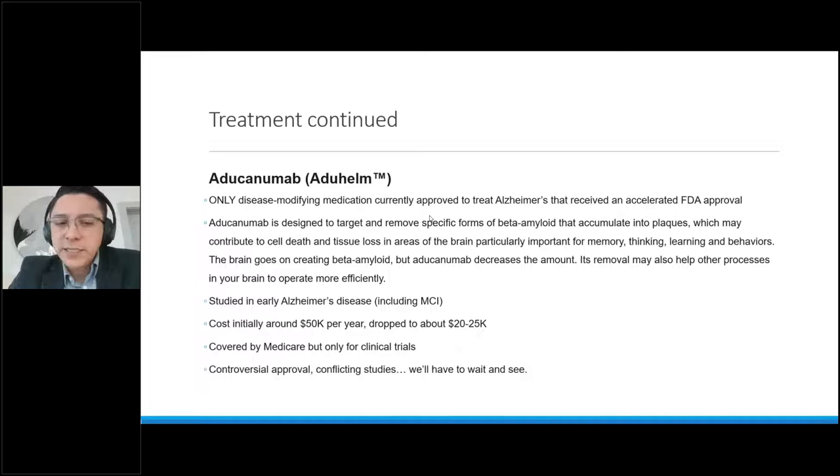Now, the new kid on the block. If you guys kept up with the news this last year, you probably saw that there was a new breakthrough treatment for Alzheimer's disease, aducanumab or Aduhelm, MAB at the end, that indicates monoclonal antibody immunotherapy. And it is the only disease-modifying medication that is currently approved to treat Alzheimer's disease. And it received an accelerated FDA approval. Now, that's perhaps a topic to discuss in a different setting, but it was actually a breakthrough drug. And it is designed to target and remove beta amyloid. Now, that's a very important thing because it doesn't stop the body or the brain from producing beta amyloid plaques. What this does is just comes and cleans it up.